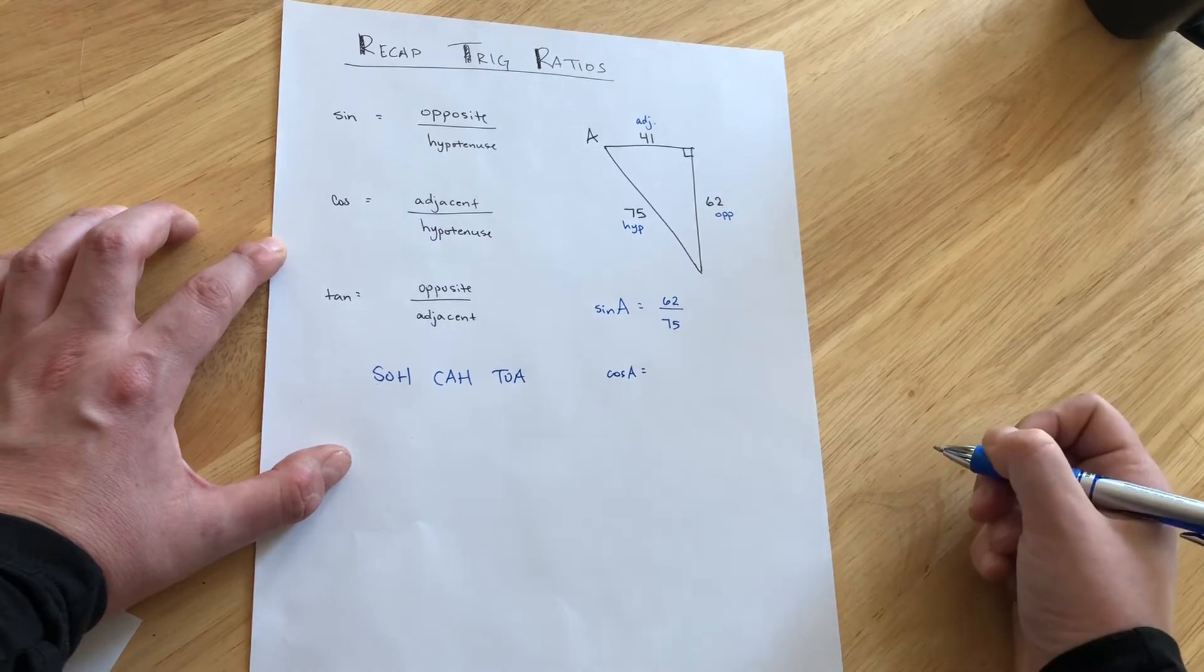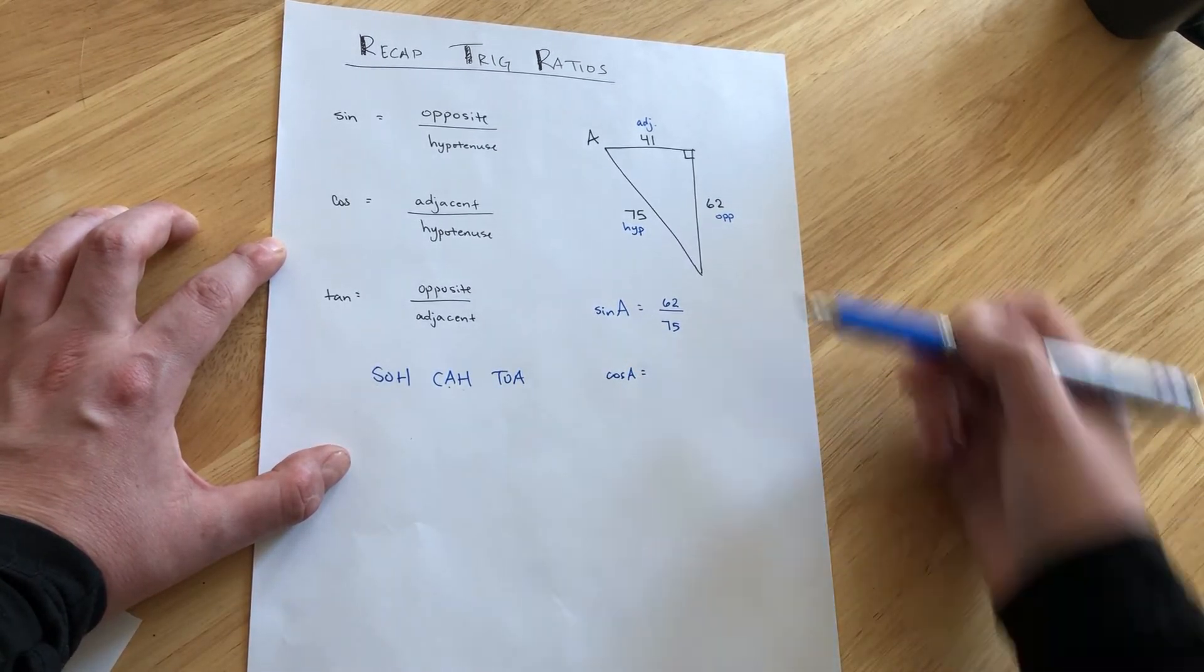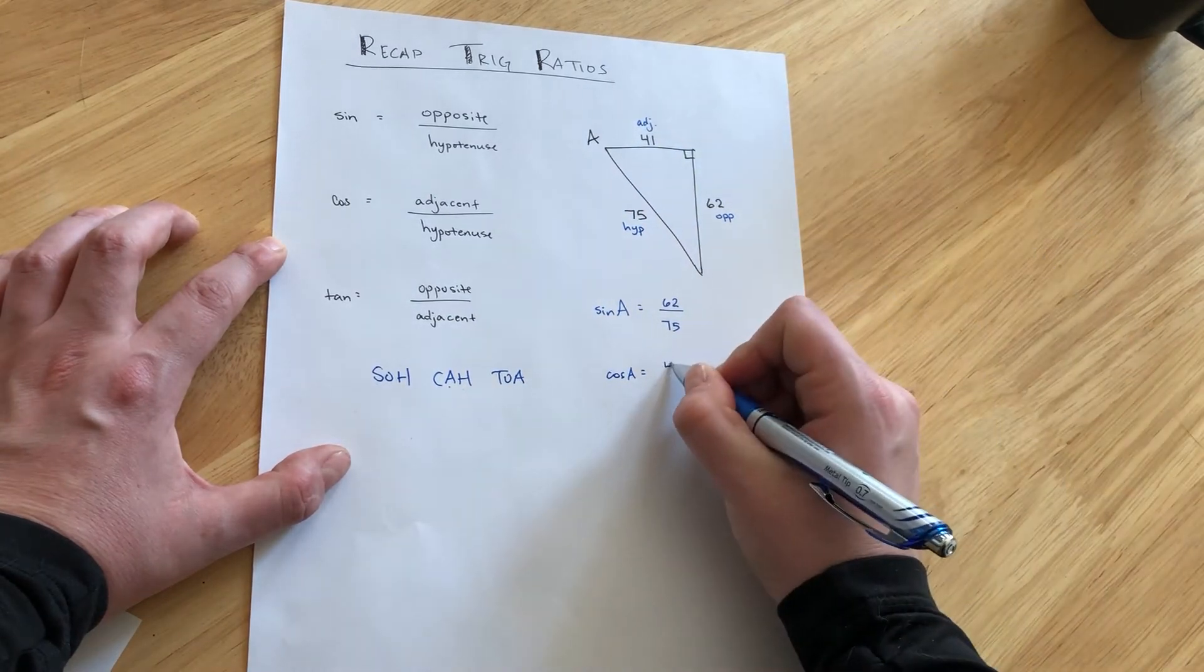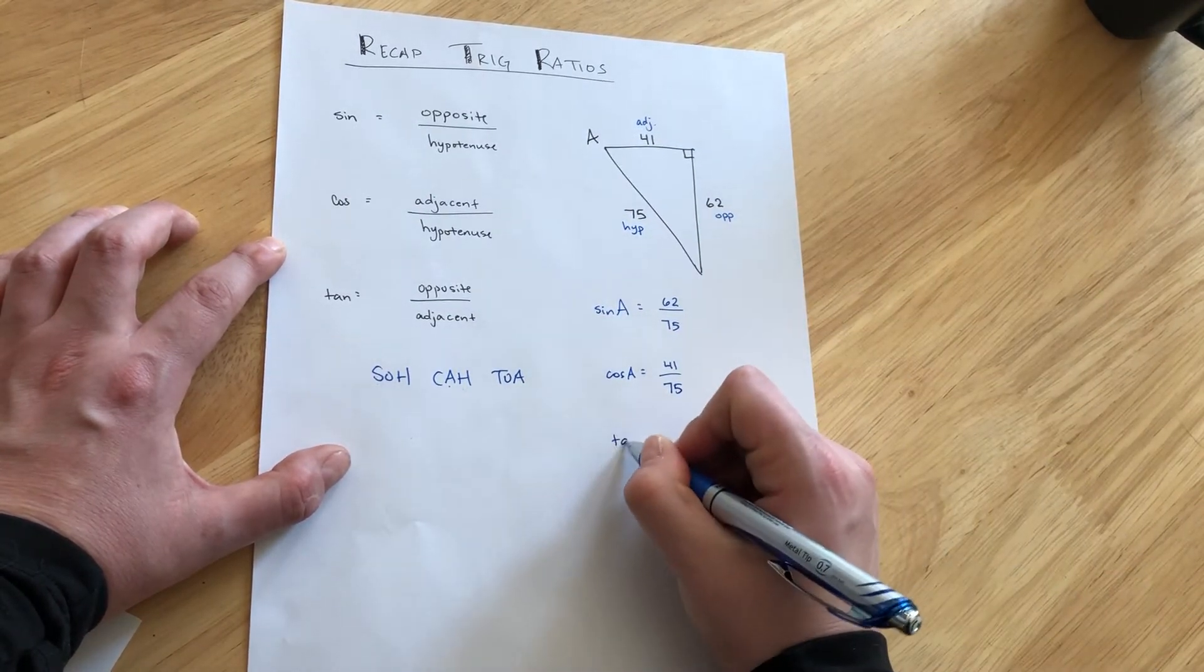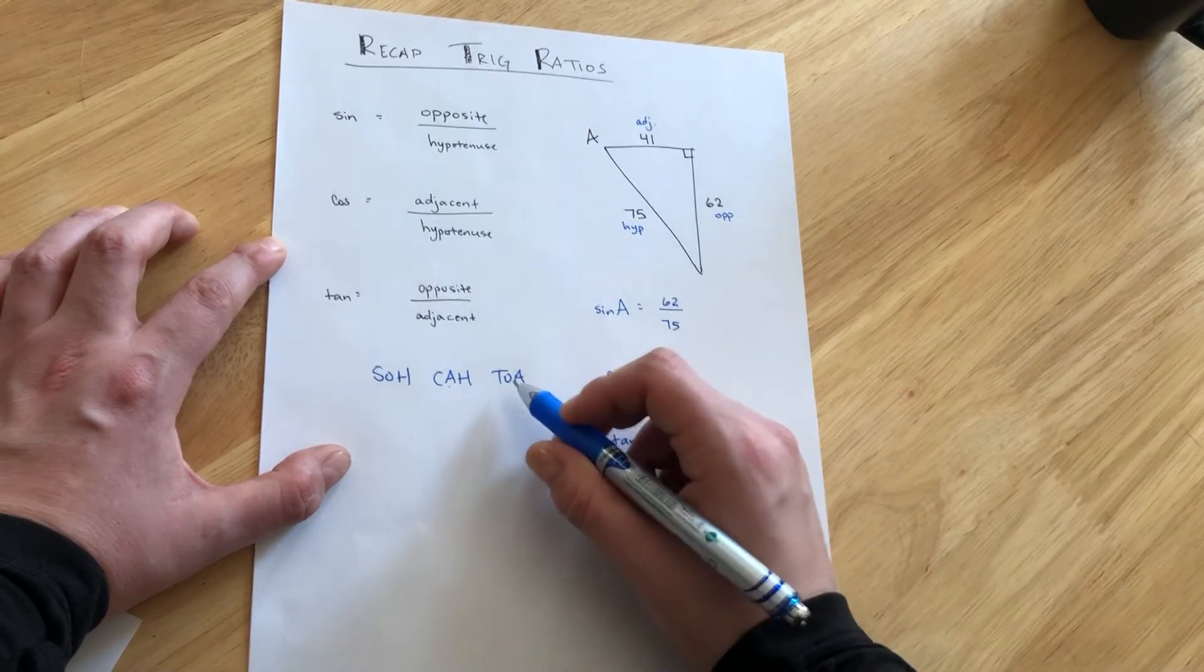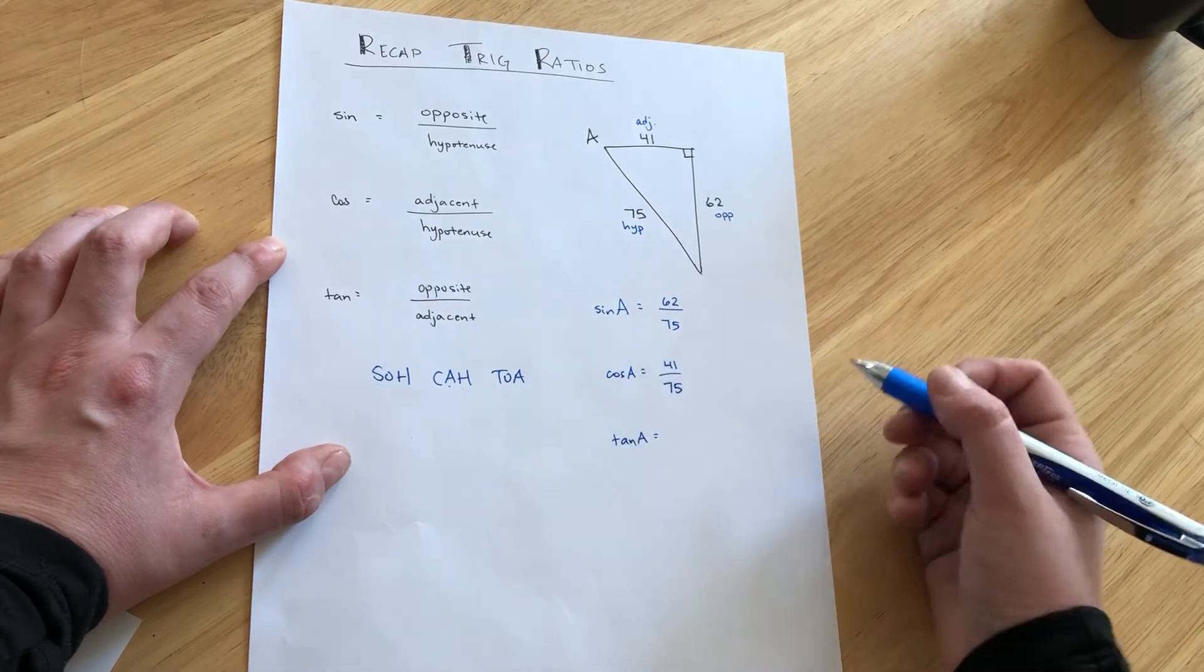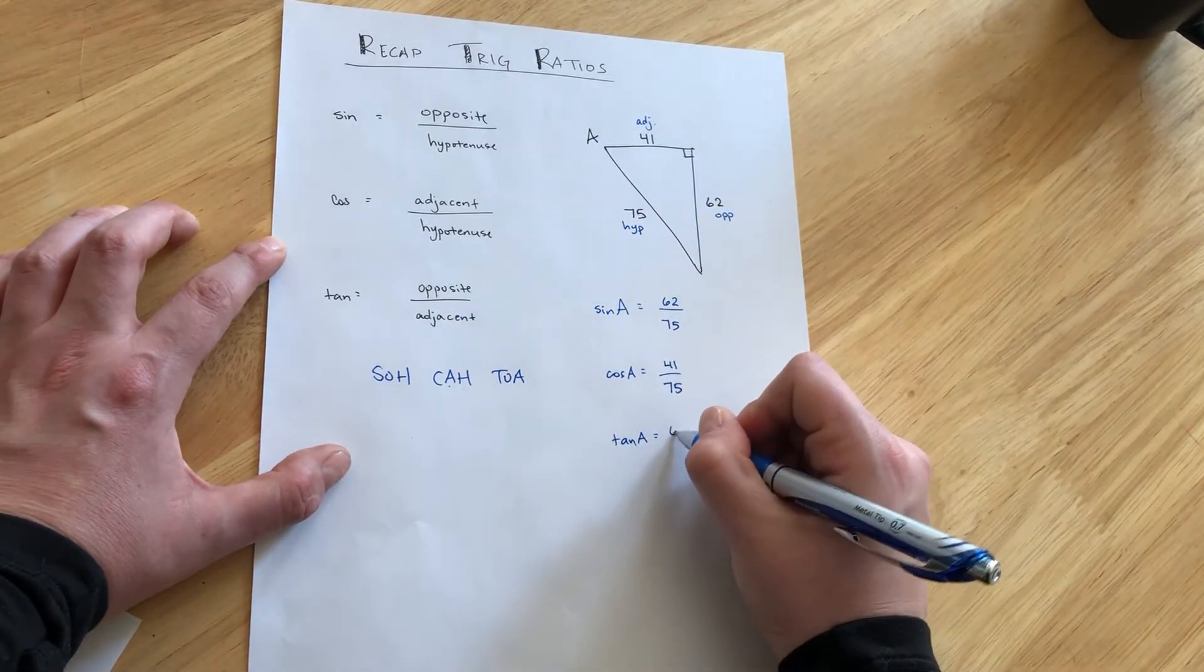Cosine of angle A, well cosine puts the adjacent over the hypotenuse, so we've got our adjacent 41, the hypotenuse 75. And lastly, tangent of angle A, well tangent puts the opposite over the adjacent, so 62 over the 41.